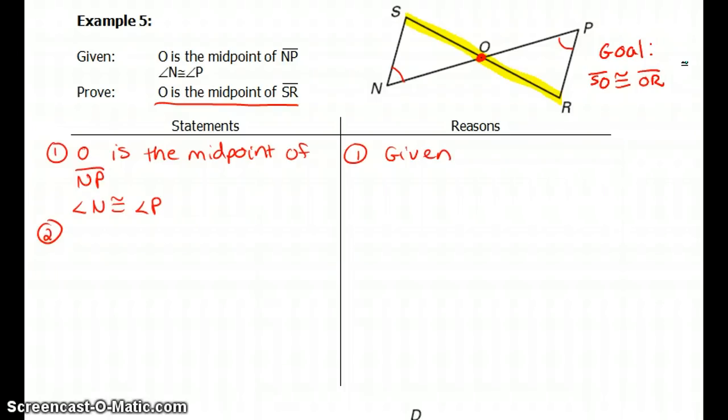So segment SO would have to be congruent to segment OR in order for O to be the midpoint. So before we prove what we need to prove, we should prove this goal. Now before I can say that SO is congruent to OR, the goal before that should be to prove that the triangles are congruent. Let's think about our first goal of proving that triangles are congruent.